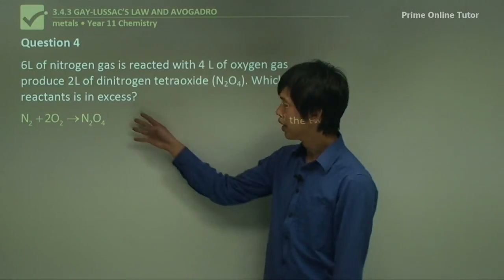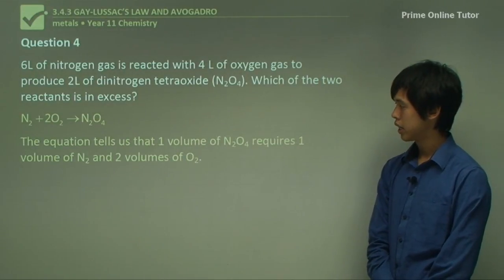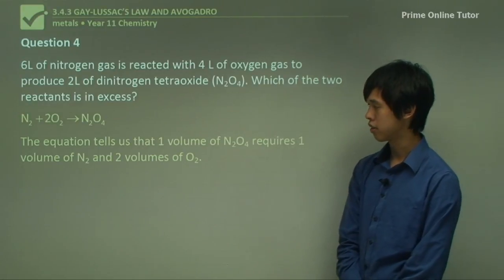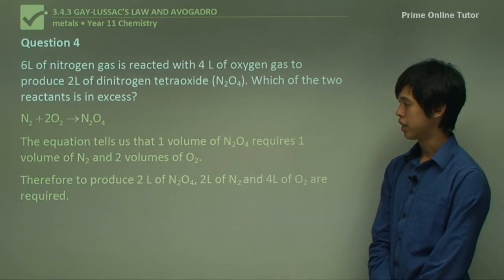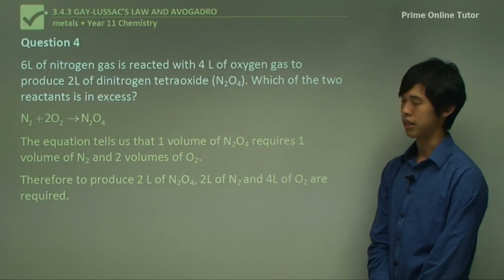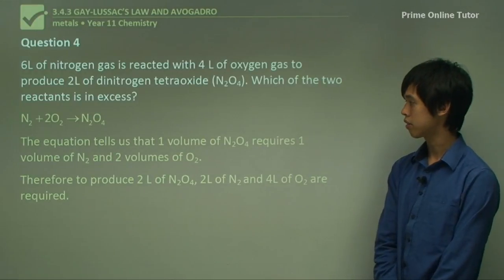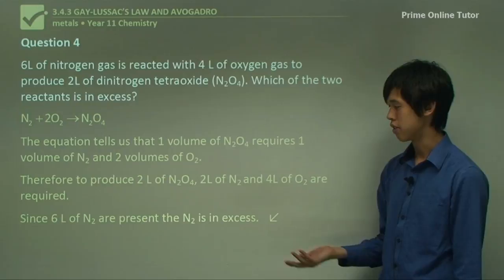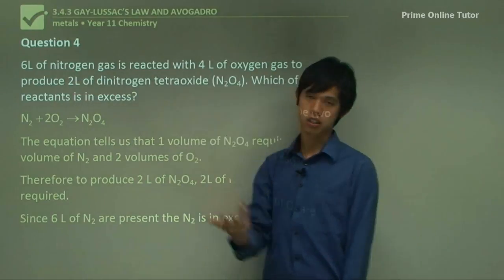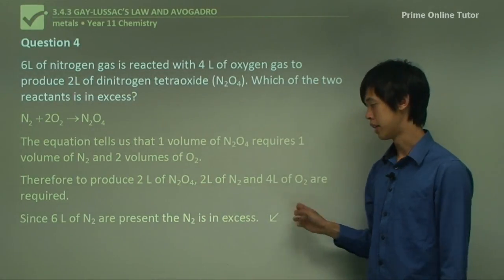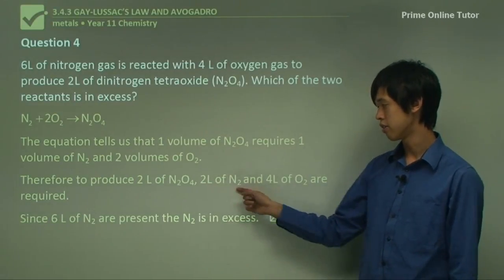So again, we keep going back to the chemical equation. I keep looking at the chemical equation and there it is. The equation tells us that 1 volume of N2O4 requires 1 volume of N2 and 2 volumes of O2. Therefore to produce 2 liters of N2O4, 2 liters of nitrogen and 4 liters of oxygen are required. Since 6 liters of N2 are present, the N2 is in excess. So while we did think that this was going to be the one, it actually does happen to be the case. But in many other cases it may not be. But in this case it is. So N2 is the one in excess because we only needed 2 liters but we had 6.